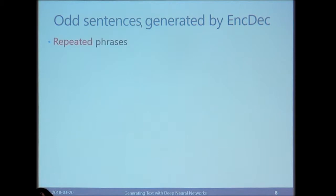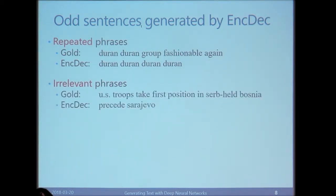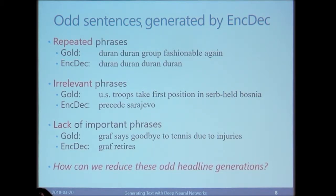However, the encoder-decoder architecture sometimes suffers from odd headline generation. For example, the gold headline might be 'Duran Duran Group Fashionable Again,' but the encoder-decoder misunderstands the task and generates only 'Duran, Duran, Duran, Duran.' We call this repeated phrase generation. In another example, the architecture generates a strange sentence irrelevant to the input. In a third example, the gold headline includes details about a retirement, but the encoder-decoder generates only two words. The goal of this study is to reduce this kind of odd headline generation.